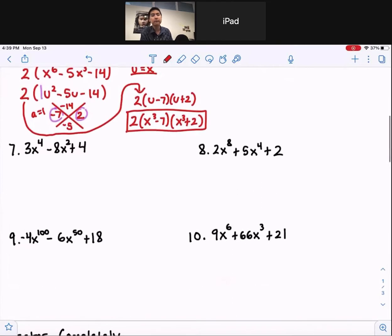Okay, number 7. We can't factor out anything from all of them. And look, this 4 is double of 2. So we're going to set u equals x squared. So 3u squared minus 8u plus 4.